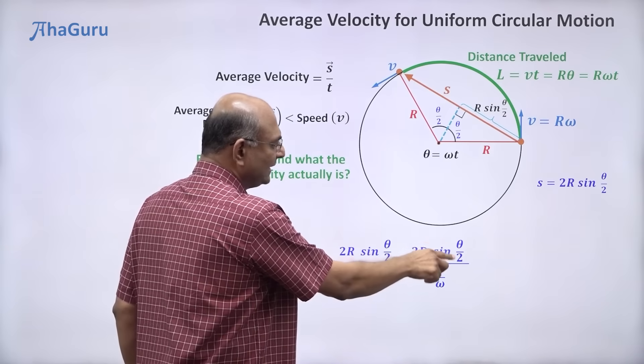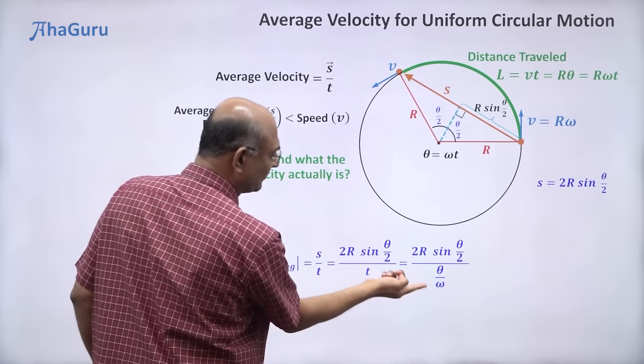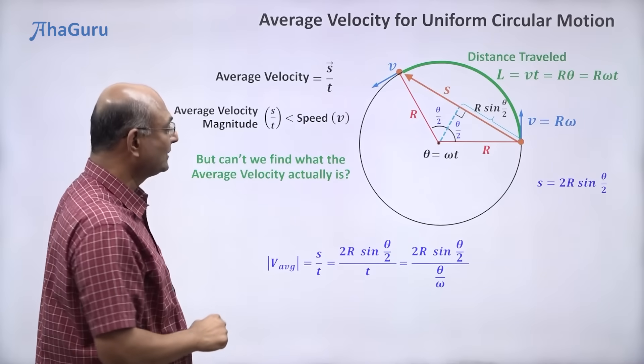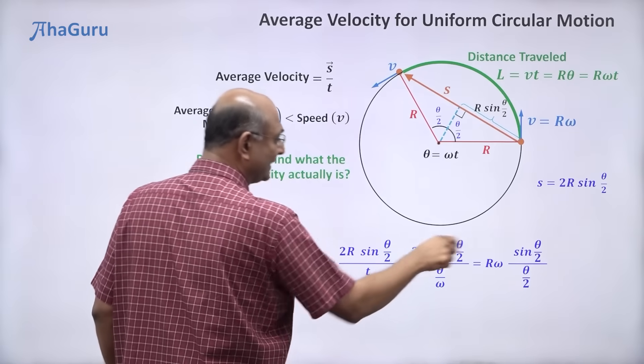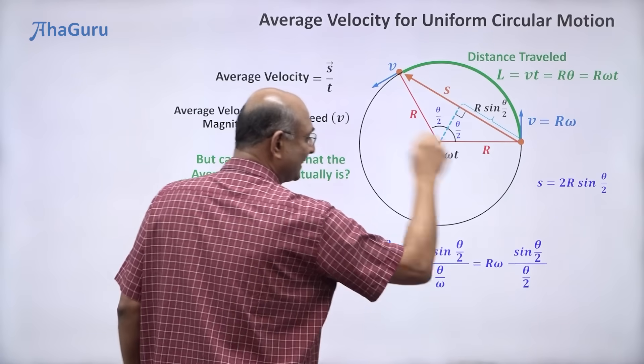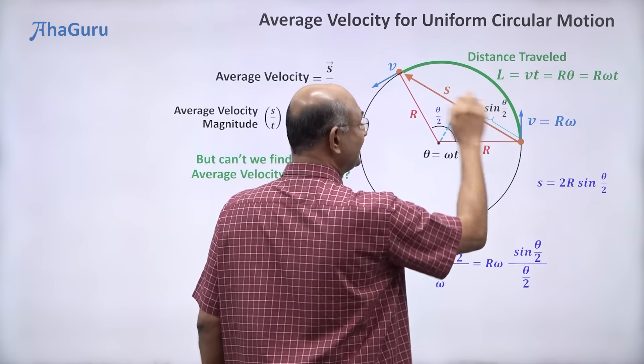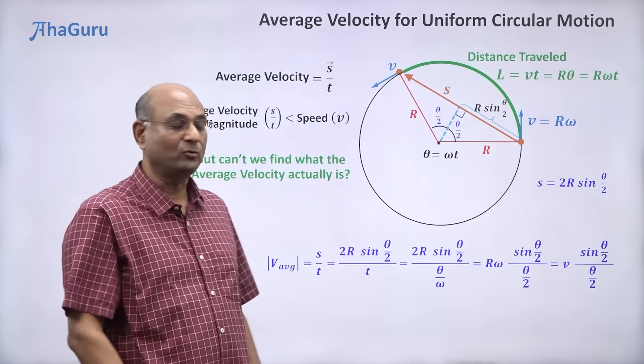Because you see, theta by 2 is here. So it will be nice if this is also theta by 2. So what I am going to do is I am going to take the omega up and I am going to bring the 2 down. So then I can rewrite it as r omega into sin theta by 2 by theta by 2. You see that there is a nice symmetry here. What is r omega? That is the instantaneous linear speed v. So v times sin theta by 2 by theta by 2.